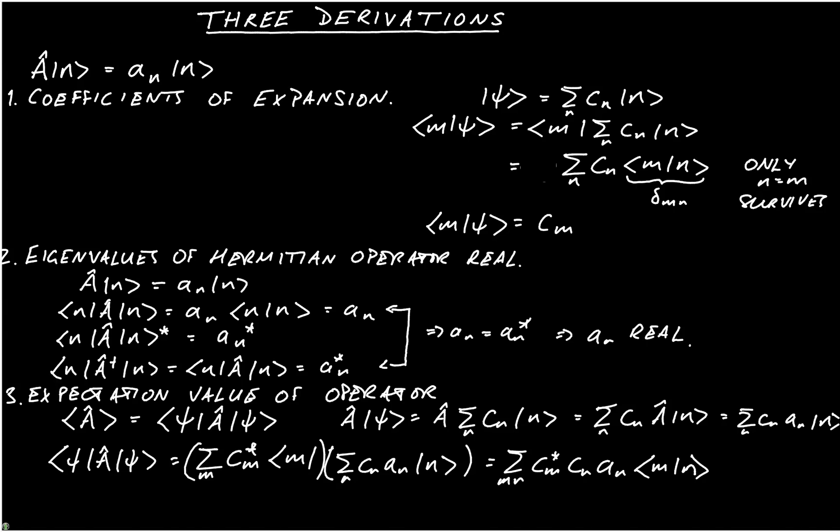When we do the sum over m, only m equals n survives.